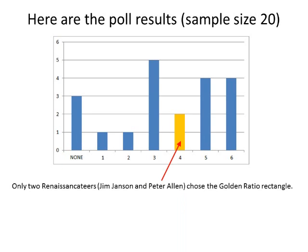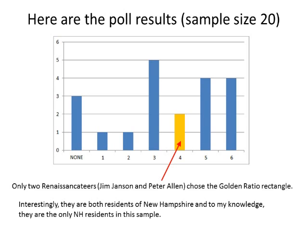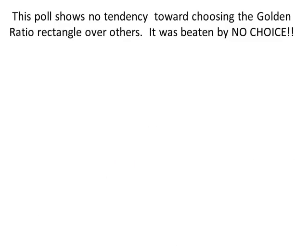Only two Renaissance-ateers, Jim Jansen and Peter Allen, chose the golden ratio rectangle. Interestingly, they are both residents of New Hampshire, and to my knowledge they are the only New Hampshire residents in this sample. This poll shows no tendency towards choosing the golden ratio rectangle over the others — it was even beaten by no choice at all.